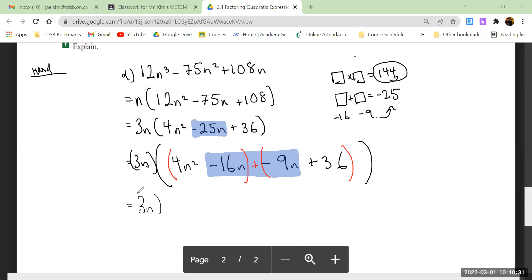So we have 3n. Common factor from 4n² - 16n is 4n(n - 4). What can I factor out of -9n + 36? I'm going to factor out a negative 9, giving me positive n - 4. The same thing as before.